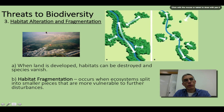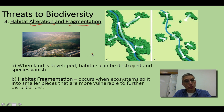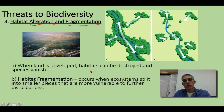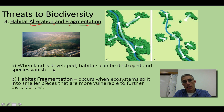Another threat to biodiversity is habitat alteration and fragmentation. To alter a habitat simply means to change it, and for many species — whether plants or animals — changing any aspect of their habitat will have detrimental effects on that organism. Typically, we take the habitat and develop it in some way, significantly altering it so the organism can no longer survive. To fragment the habitat simply means to take the habitat and break it apart.